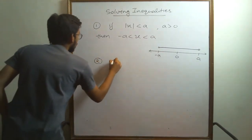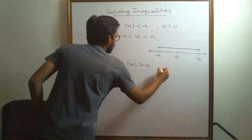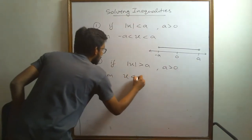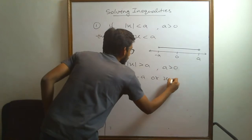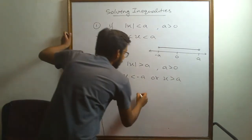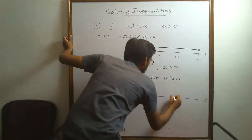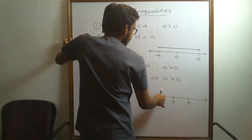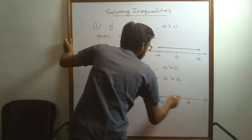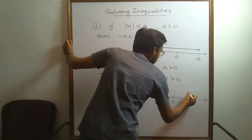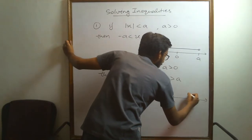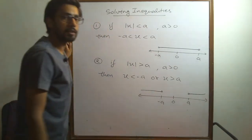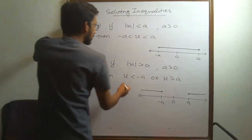Second, if mod of x is greater than a, where a is positive, then x is either less than minus a or x is greater than a. Again let's look at the number line to understand. This is 0, this is a and this is minus a. The distance from 0 to minus a and a both is a units. So since the distance should be greater than a, x has to be either greater than a or it has to be less than minus a such that its distance from origin is greater than a. So this is our solution.